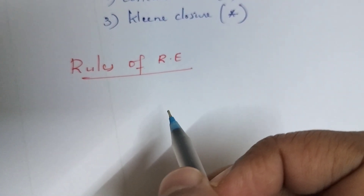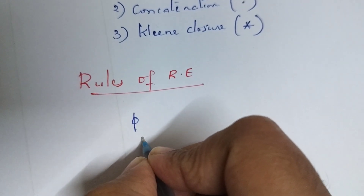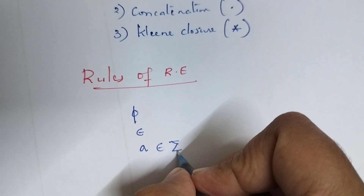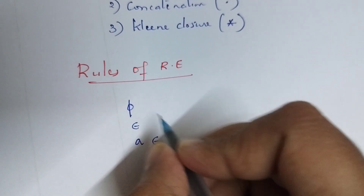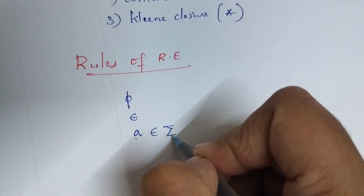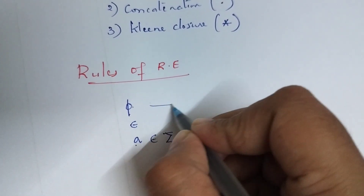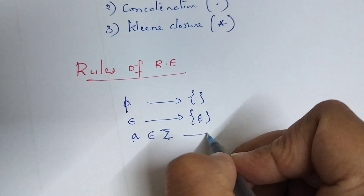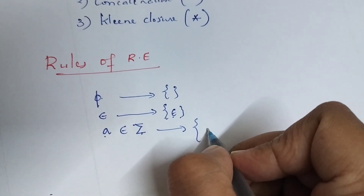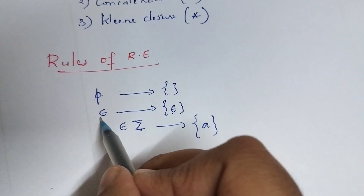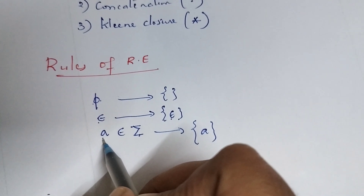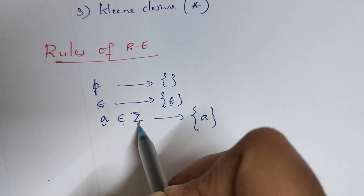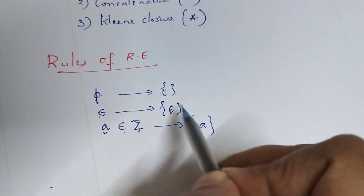Next are the rules of regular expression. If phi (∅), epsilon (ε), and any input symbol 'a' belonging to sigma (Σ) are regular expressions, then the corresponding languages are: phi corresponds to the empty set; epsilon corresponds to the language containing only epsilon; and 'a' corresponds to the language containing just the symbol 'a'. These — phi, epsilon, and any input symbol — are known as primitive regular expressions.